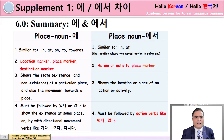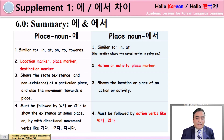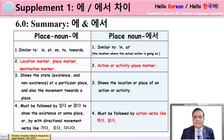Now let's do the final comparison between the marker 에 and 에서. First column: PLACE NOUN + 에. Number one: similar to IN, AT, ON, TO, TOWARDS. Number two: it is a location marker, place marker, or destination marker. Number three: it shows the STATE — meaning existence or non-existence at a particular place, and also movement towards a place when used as a destination marker. Number four — very important: when using 에, it must be followed by 있다, 없다, or directional movement verbs like 가다, 오다, 다니다.